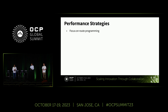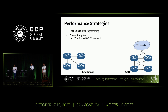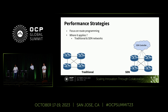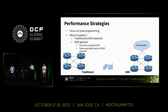We want to set expectations: we are primarily looking at route programming, which includes any type of flow — IPv4, IPv6 routes, ECMP group programming, ACL programming. This is applicable to both traditional networks and SDN networks, irrespective of whether the route is pushed from a controller or learned dynamically by routing protocols. We're talking about the lower part of the stack where routes are actually being programmed. These strategies are applicable to any stack that uses the SAI API.